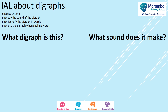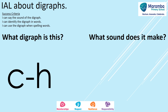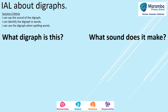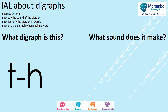Today we're going to review some digraphs we've been looking at. The first is c, h — and it makes the sound 'ch, ch'. The next is t, h — and this is a tricky one because t, h can make two sounds: the first sound, and the second sound 'th, th, th'.